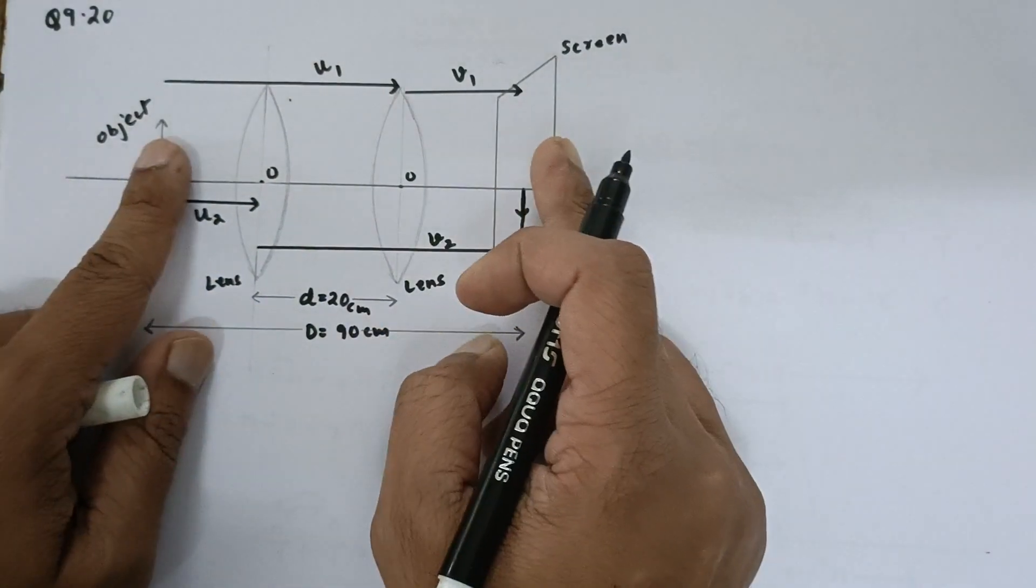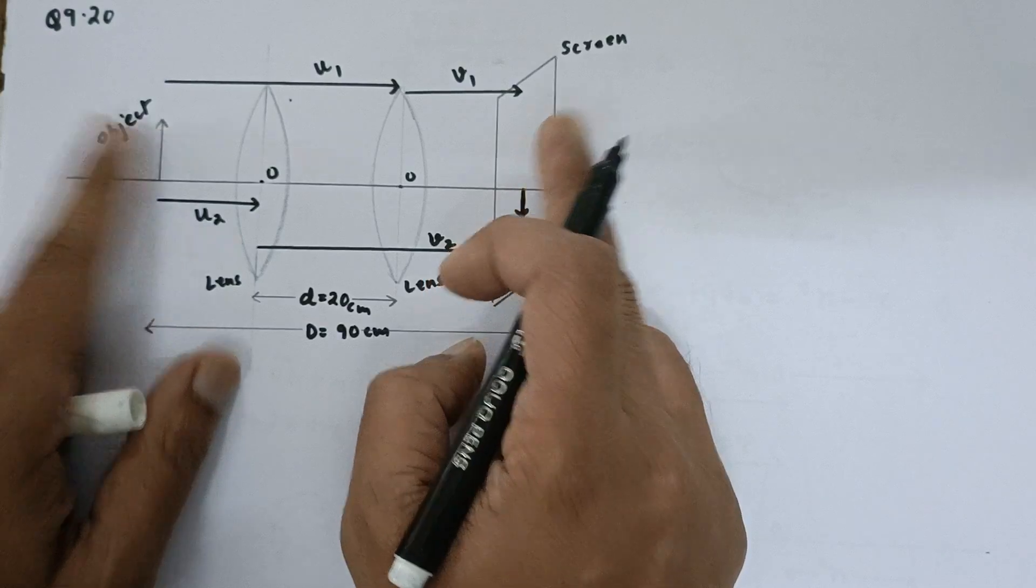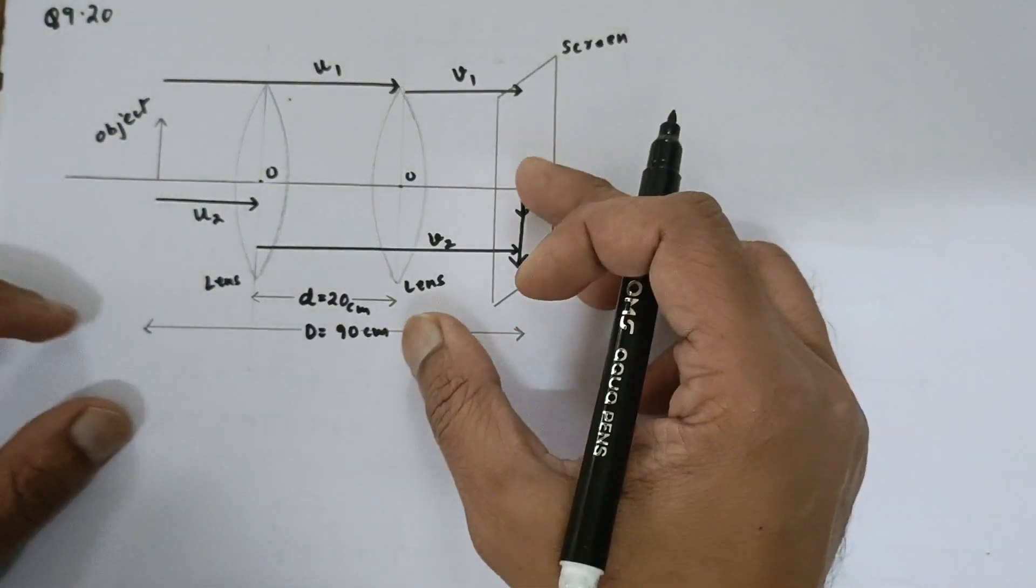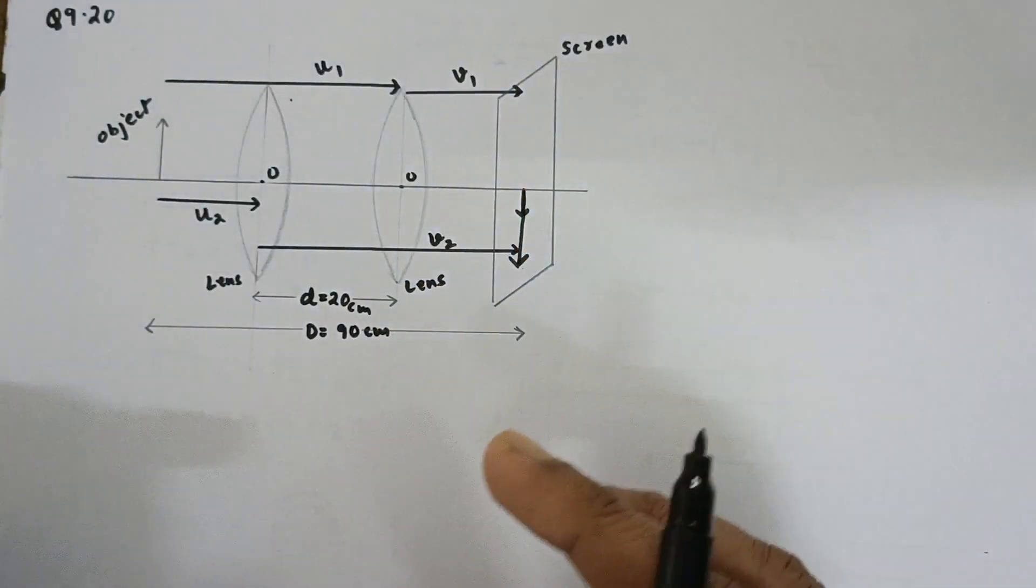So, for same distance between the object and image there are two positions where you will get the real image on the screen. This is known as displacement method to obtain the focal length of the lens.